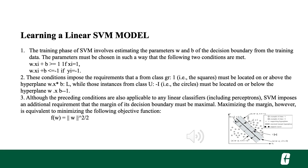These conditions impose the requirement that instances from class +1 (squares) must be located on or above the hyperplane w dot x_i plus b, while instances from class -1 (circles) must be located on or below the hyperplane w dot x_i plus b minus 1. SVM imposes an additional requirement that the margin of the decision boundary must be maximum. Maximizing the margin is equivalent to minimizing the objective function: f(w) = ||w||² / 2.